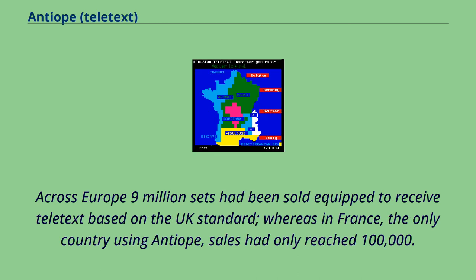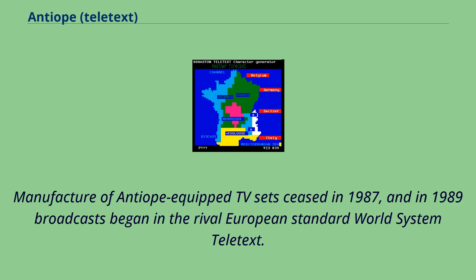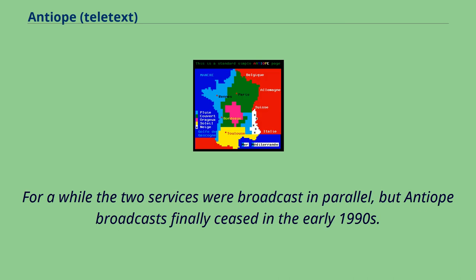Across Europe, 9 million sets had been sold equipped to receive teletext based on the UK standard, whereas in France — the only country using Antiope — sales had only reached 100,000. Manufacture of Antiope-equipped TV sets ceased in 1987, and in 1989 broadcasts began in the rival European standard World System Teletext. For a while the two services were broadcast in parallel, but Antiope broadcasts finally ceased in the early 1990s.